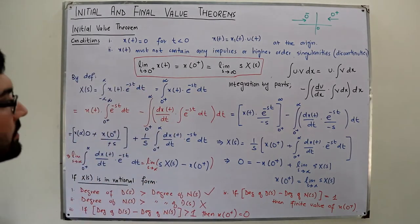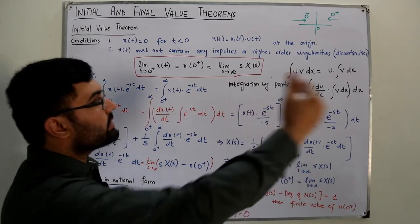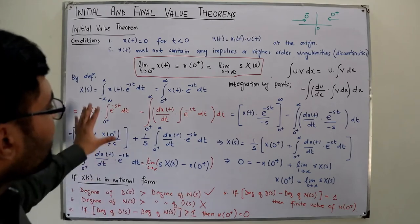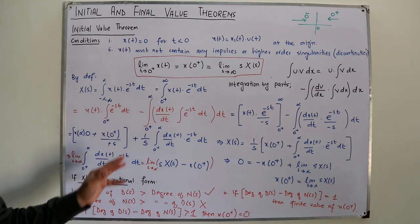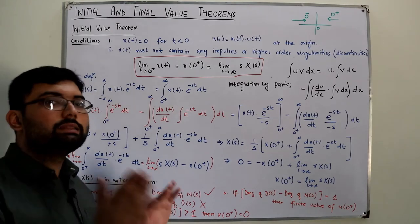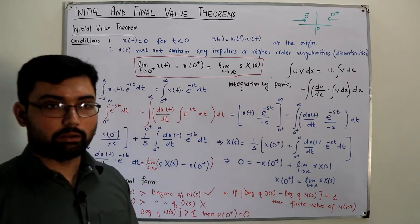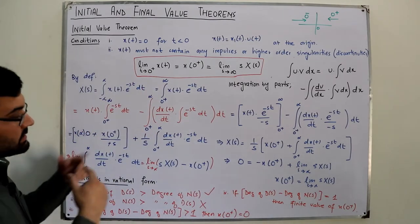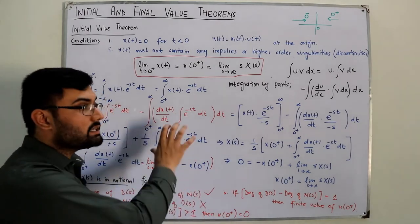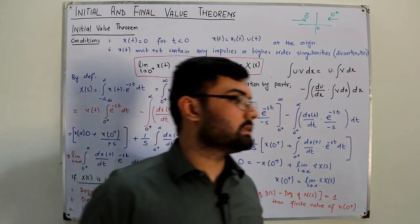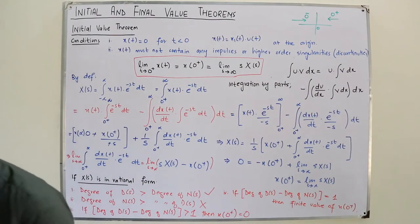To summarize the initial value theorem: we have two initial conditions on the signal. It tells you the initial value — the value just after zero when approached from the right side. We used the integration by parts formula to prove it mathematically. If X(s) is rational, the degree of the denominator must be greater than the numerator for it to be applicable, and the theorem gives a finite value only when the difference of degrees equals one. Now let's study the final value theorem.